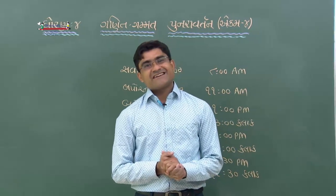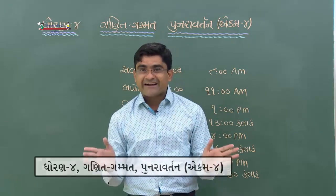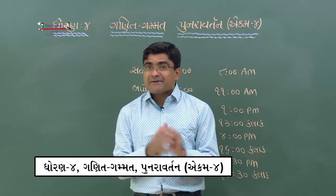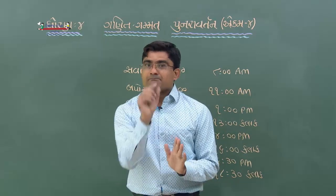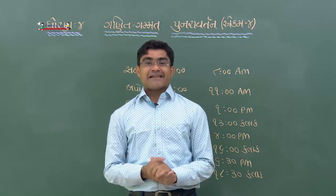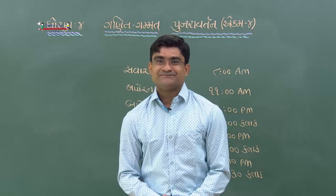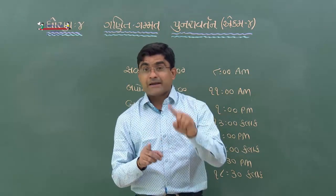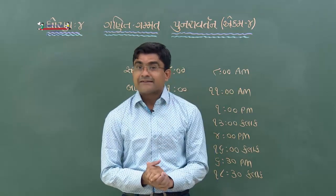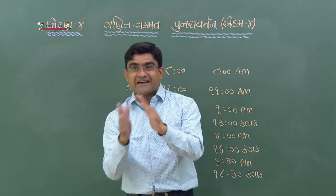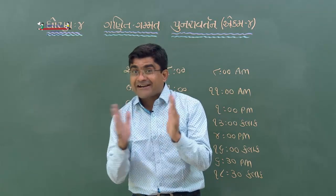ટિક ટિક ટિક - આ એકમ ફરીથી પૂર્ણ. આ વર્ગમાં ઘડ્યારમાં સમય વાંચવો - બે અંક વચ્ચે 5 કાપા, 12 – 1 સૂધી 5 મિનિટ - ઘડ્યાર દોરતા, ઘડ્યારમાં સમય નિર્દેશ, મિનિટ કાંટો અને કલાક કાંટો.